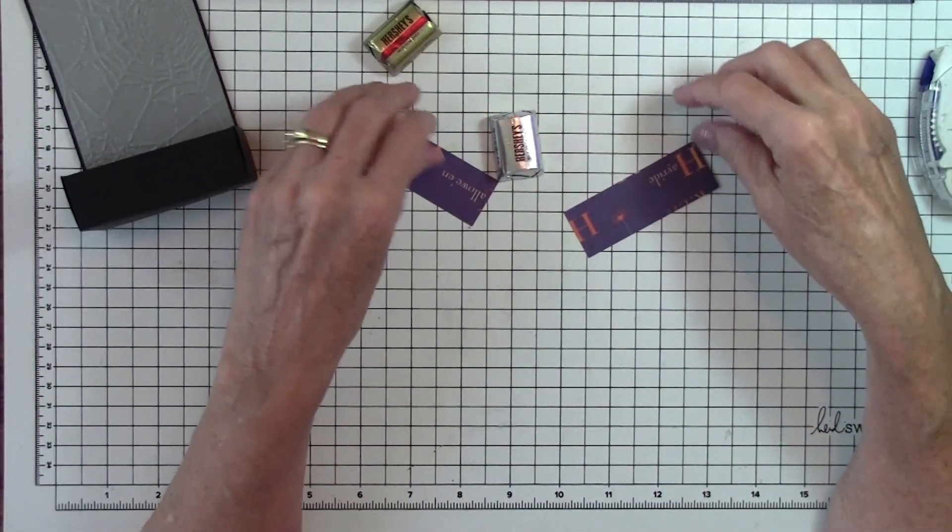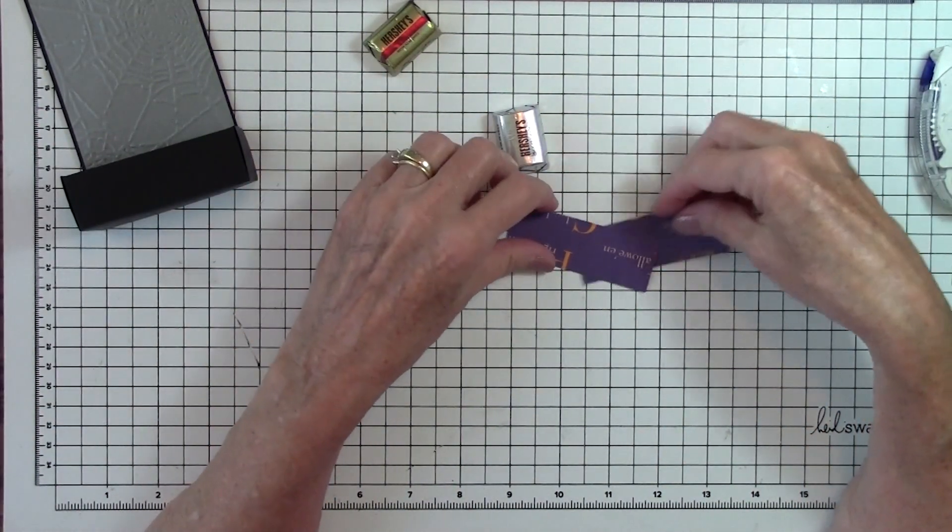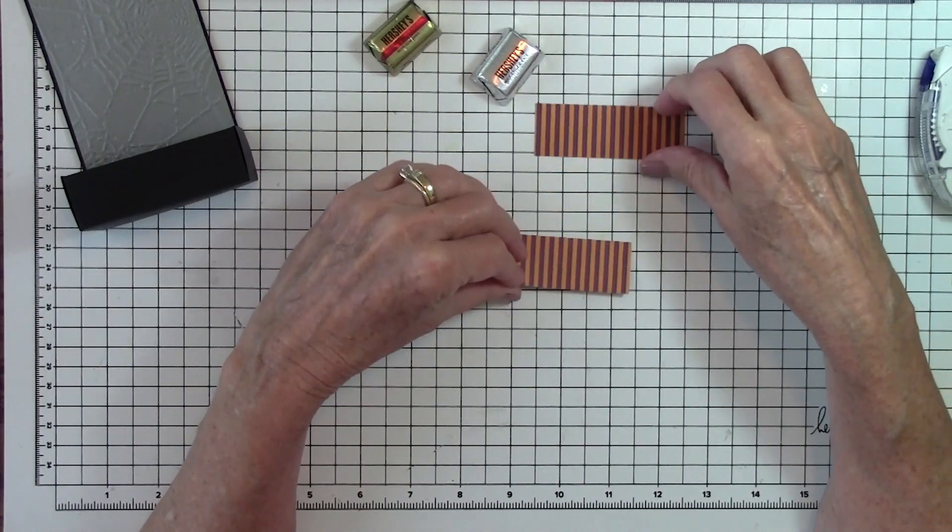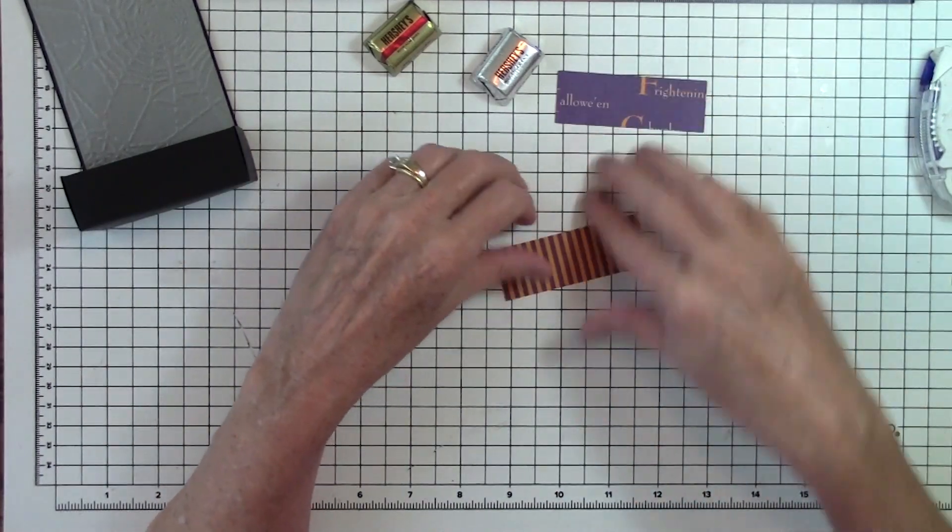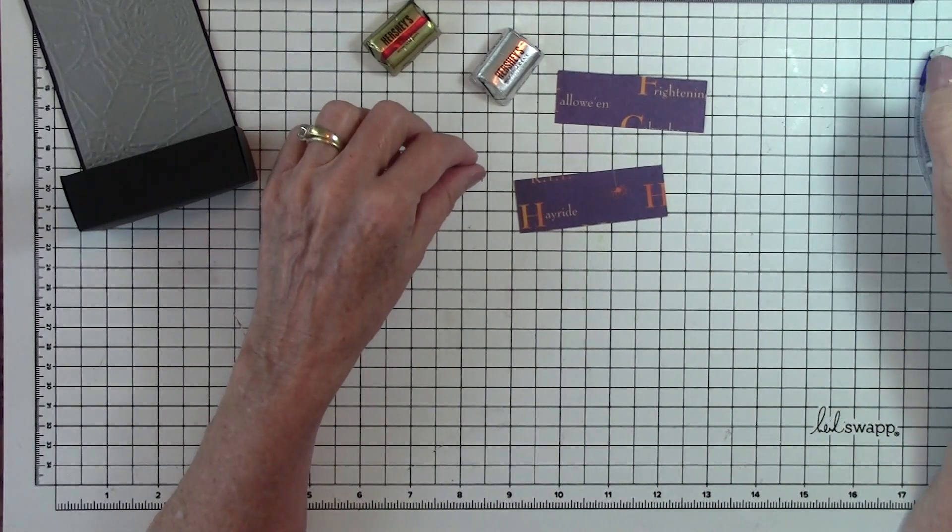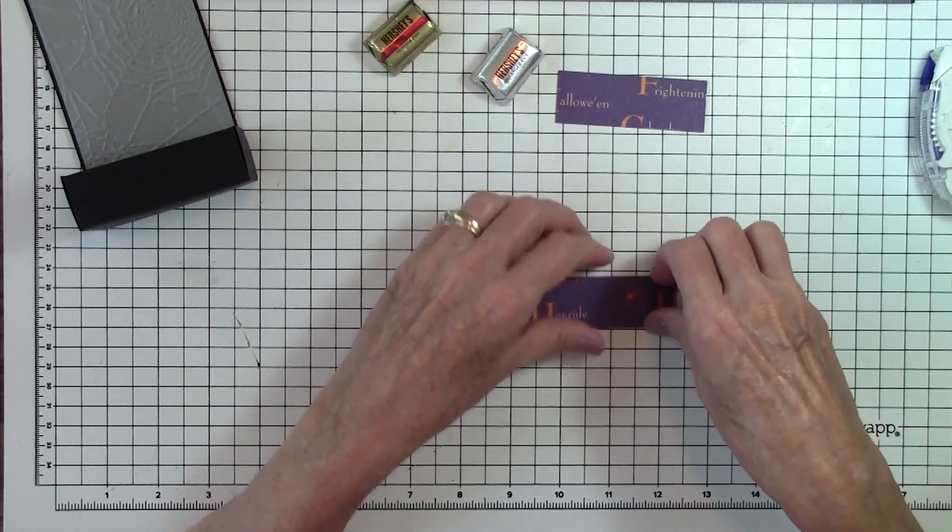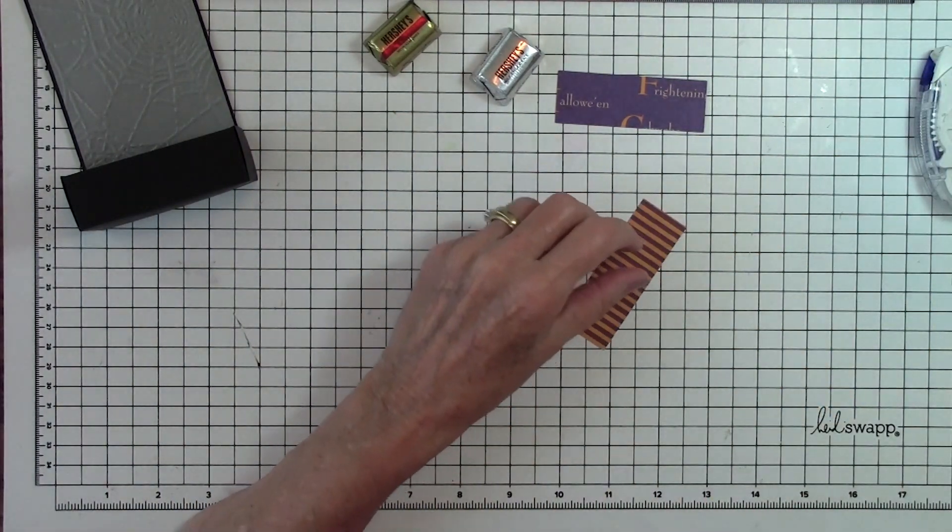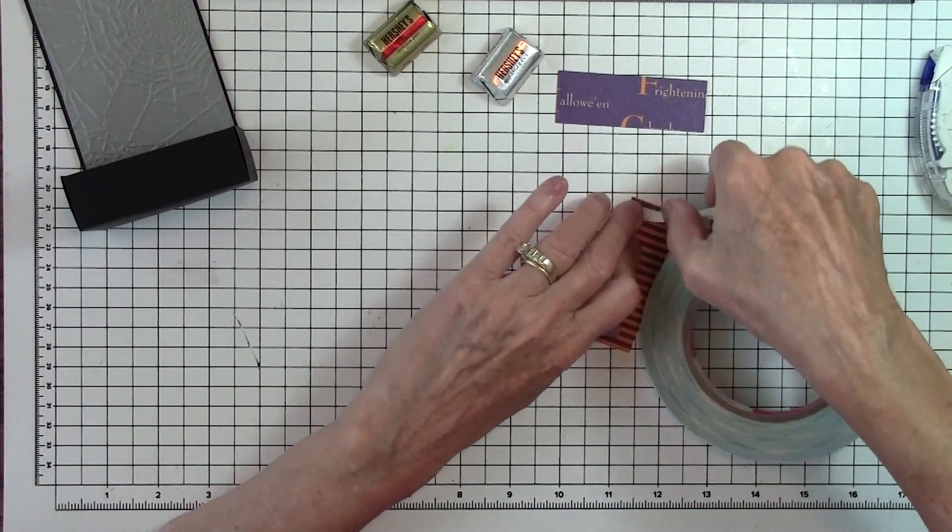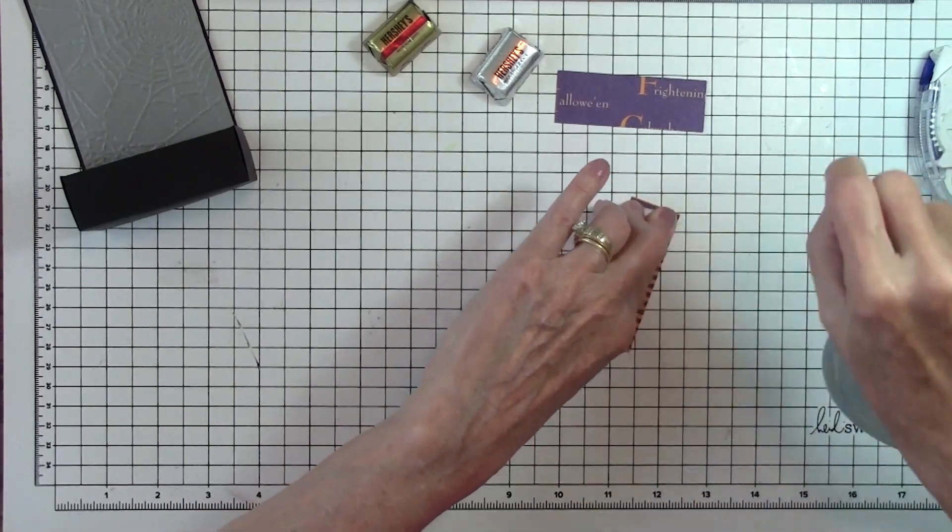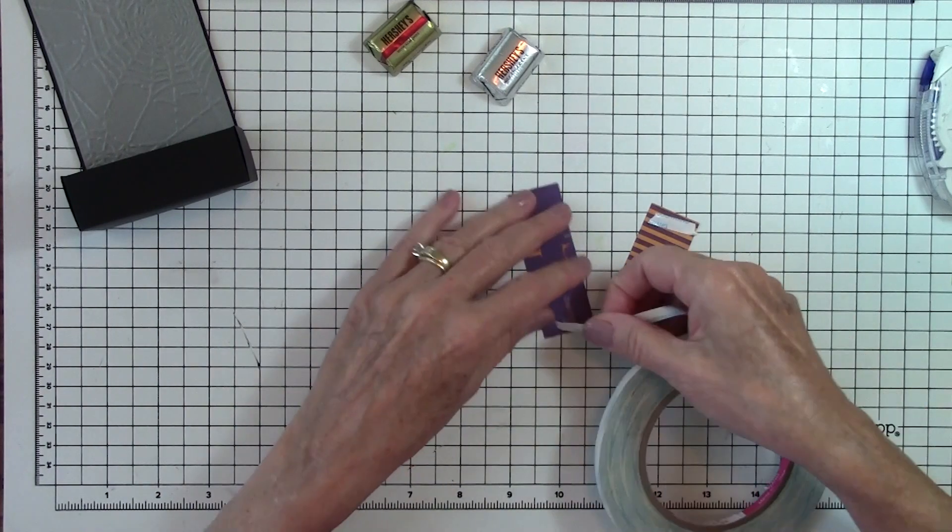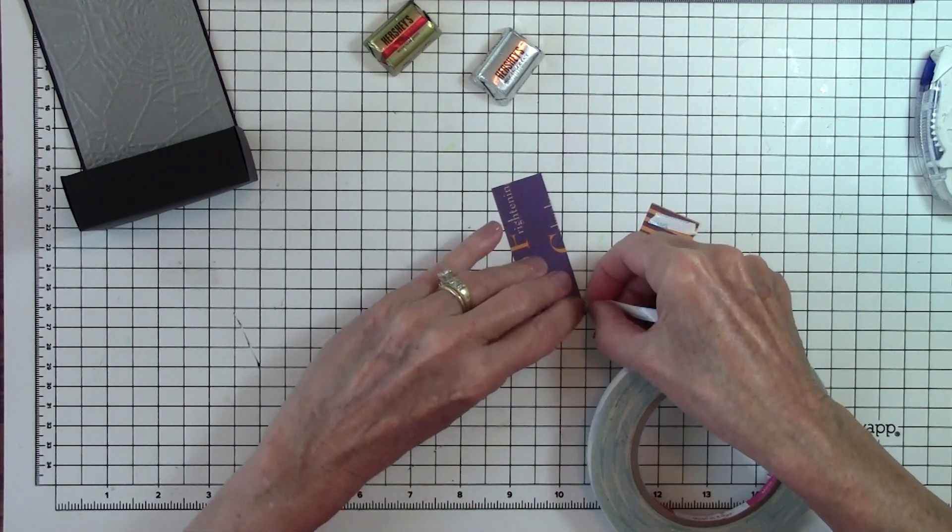Now we want to wrap the candy. So in this particular kit, we had two of the same papers. So we're going to do one one way and one the other way. I'm going to look at what I have, I kind of like that little spider there. So I'll use the purple side at the top. So I want to put the score tape on the stripe side. Just one piece, and then this one I'll put on the purple side.